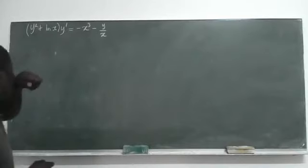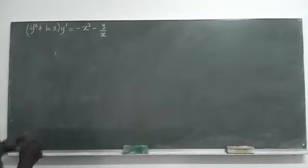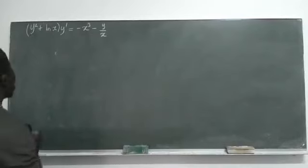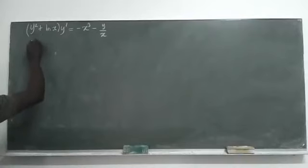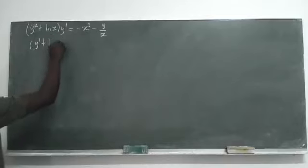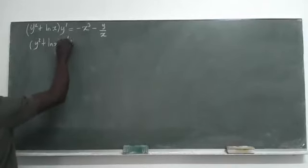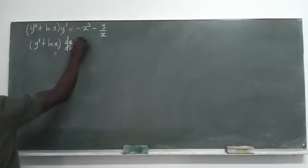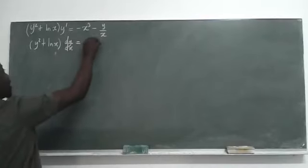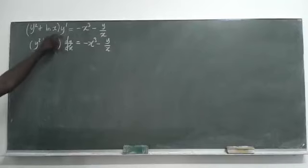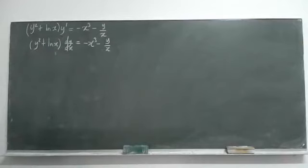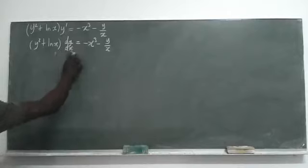Given this problem, I would advise you to rewrite this expression so we can clearly see what's going on with y prime. We have y squared plus ln(x), and y prime is dy/dx, then equal to minus x cubed minus y over x. I just rewrote y prime as dy/dx.